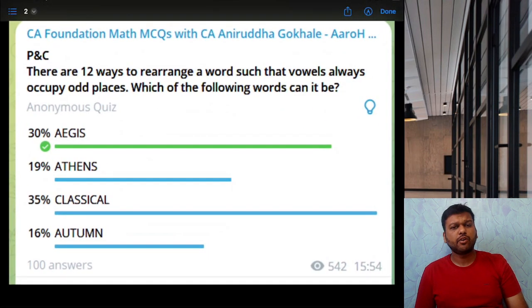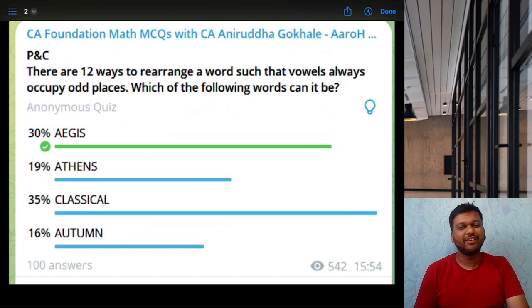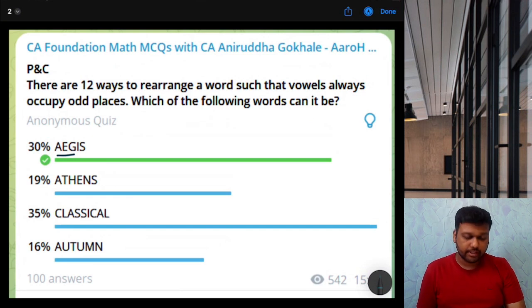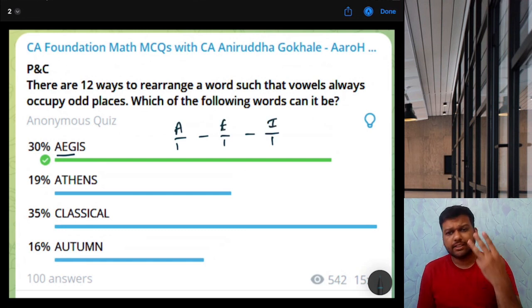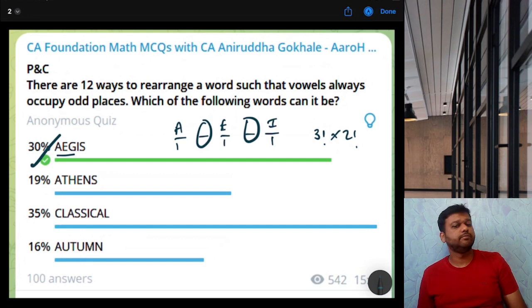Last one. There are 12 ways to rearrange a word such that vowels always occupy odd places. Which of the following words can it be? It is a reverse question. So, let's go by options. A only. A, G, I, S. We want vowels to be at odd places. If the word is 5 letter word, 1, 2, 3, 4, 5, then vowels can be this, this and this. How many vowels are there? A, E, I. 3 places, 3 vowels. So, 3 factorial. And 2 places, 2 consonants. So, 2 factorial. 3 factorial into 2 factorial is 12. So, this is the correct answer.